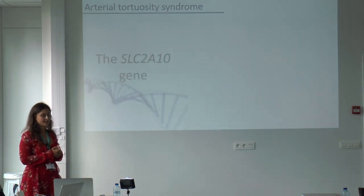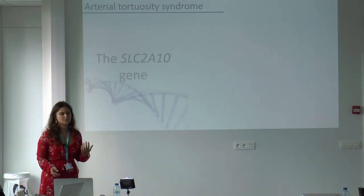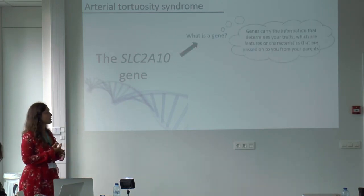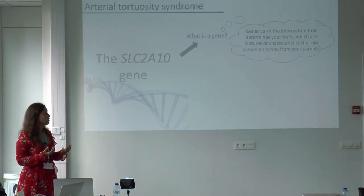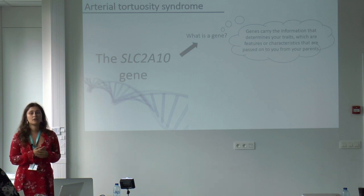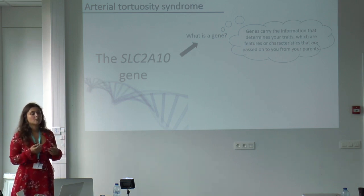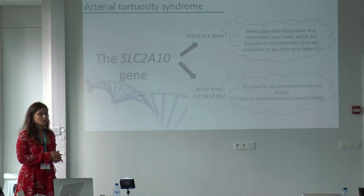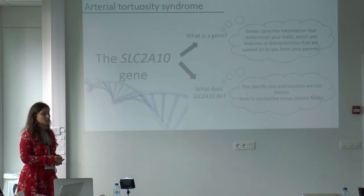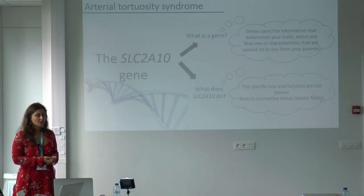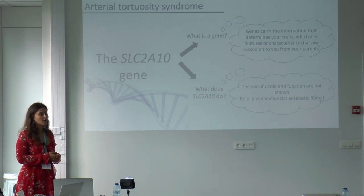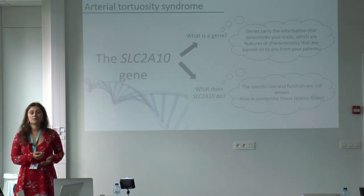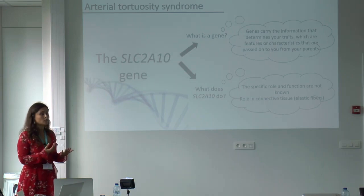The SLC2A10 gene — what is a gene and what do genes do? Genes carry information that determines your traits: how you look, how tall you are, the color of your eyes — everything is written in your genes and passed on from your parents. For the SLC2A10 gene, which we know causes arterial tortuosity syndrome, we want to know what it does. However, we do not fully know yet. We know it has a role in connective tissue and especially in elastic fibers, but the specific role and function are not known yet. That's why it is very important to perform further research on patients.